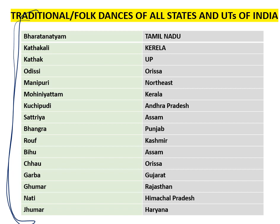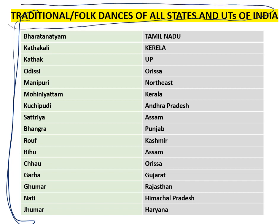Bharatnatyam belongs to Tamil Nadu. Kathak belongs to Uttar Pradesh. Odissi belongs to Odisha. Manipuri belongs to the North East. Kathakali belongs to Kerala. Kuchipudi belongs to Andhra Pradesh. Sattriya belongs to Assam. Also noting: Rauf is from Kashmir, and Garba is from Gujarat.